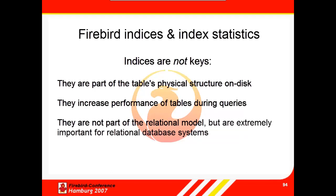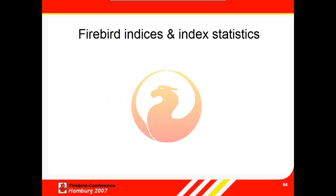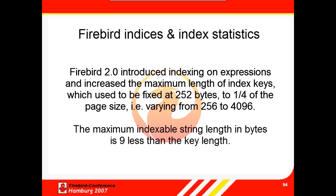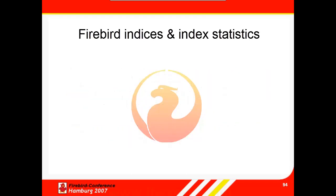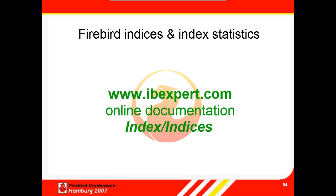In spite of this, indices are extremely important for relational database systems. For columns defined with a primary key or a foreign key in a table, Firebird automatically generates a corresponding ascending index and enforces the uniqueness constraint demanded by the relational model. Firebird 2 introduced indexing on expressions and increased the maximum length of index keys, which used to be fixed at 252 bytes, to one quarter of the page size, varying from 256 to 4096 bytes. The maximum indexable string length in bytes is 9 less than the key length. You'll find a wealth of information about indices in the IB Expert online documentation chapter, Index Indices, on our website.